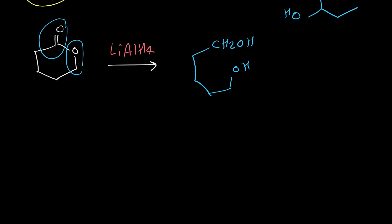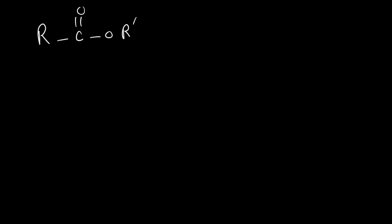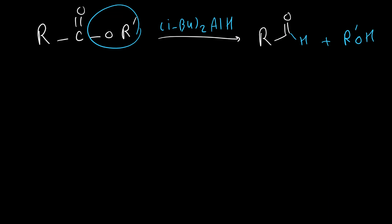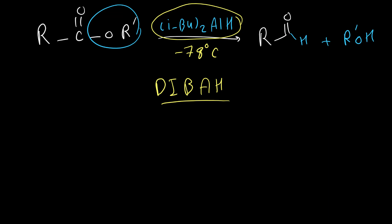So whenever we have a cyclic ester, the LiAlH4 reduction product is a diol. If we want to stop the reduction at the aldehyde step — similar to acid chloride — we use diisobutylaluminum hydride (DIBAL-H). This reagent converts an ester to an aldehyde, while the second part (OR′) converts to an alcohol. The reaction must be performed at −78°C. DIBAL-H is commonly abbreviated as DIBAL in textbooks.